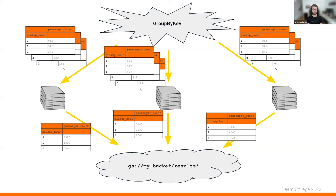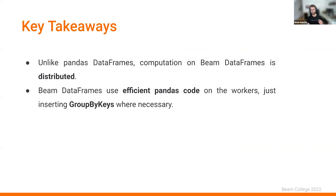The key takeaways are: unlike pandas DataFrames, Beam DataFrames are a deferred API which is a bit harder to work with, but the advantage is we can distribute the work and process it with a cluster of machines on a distributed runner. And as much as possible we're actually leveraging pandas itself — pandas is a really good efficient single-threaded execution engine for in-memory data, so we use it on the workers. We just insert group-by-keys wherever necessary in order to run analytics on your entire dataset.